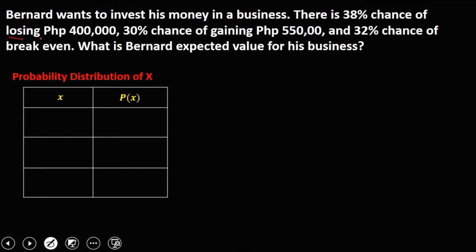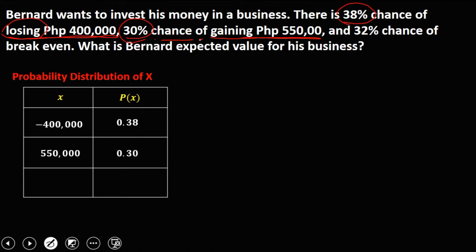Since we have losing 400,000 pesos, and since it's a loss, that's negative 400,000. The probability of losing 400,000 is a 38% chance, so in decimal that's 0.38. And gaining 550,000 pesos — since it's a gain, that's positive 550,000. The probability of gaining 550,000 is a 30% chance, so in decimal that's 0.30.